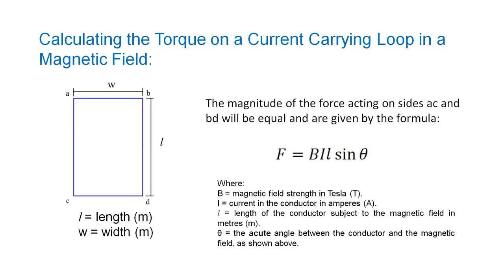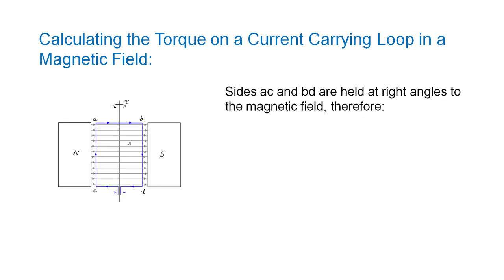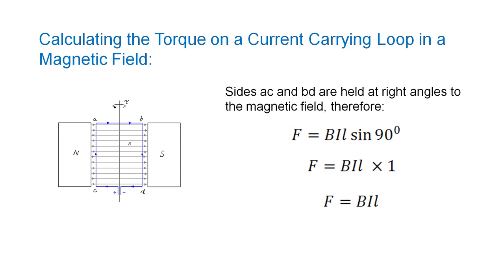The magnitude of the forces acting on sides AC and BD, which are equal to the length of the loop, are given by the formula F equals BIL sine theta, where F is the force in newtons, B is the magnetic field strength in Tesla, I is the current in amps, L is the length of each side in meters, and theta is the angle between the current direction and the direction of the magnetic field. As the sides AC and BD are held at right angles to the magnetic field as the coil rotates, the force simplifies to F equals BIL sine 90, which equals F equals BIL.